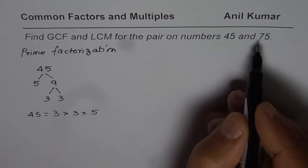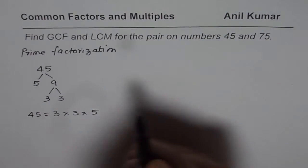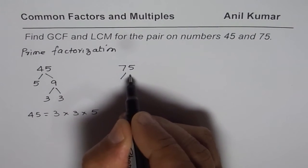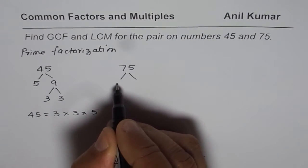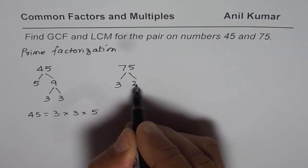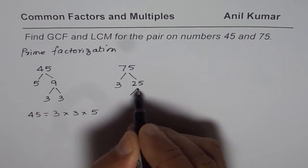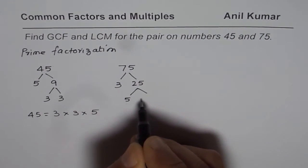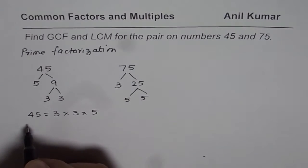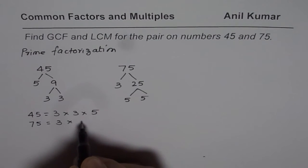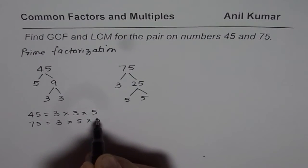Now let us prime factorize 75. 75 can be divided by 3, so 3 times 25 is 75, and 25 is 5 times 5. So for 75, we can write the prime factors as 3, 5, and 5.